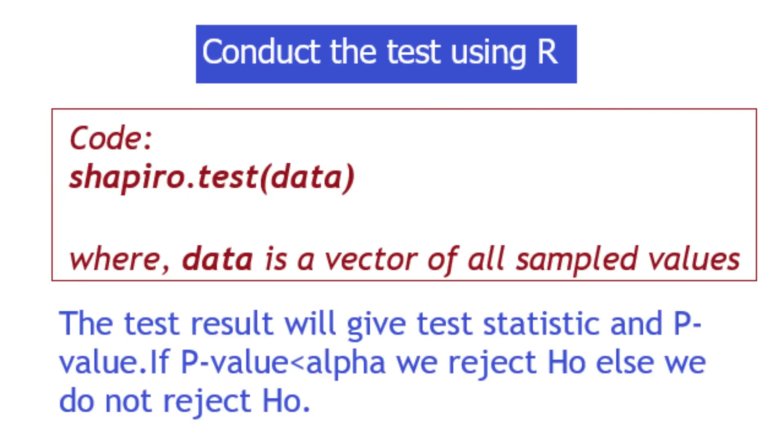Here we are using R programming to conduct the test. You can see the code. Shapiro.test function is used for the data. From the output, using p-value we can make the decision.